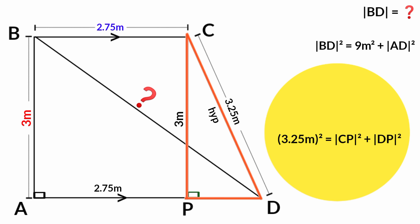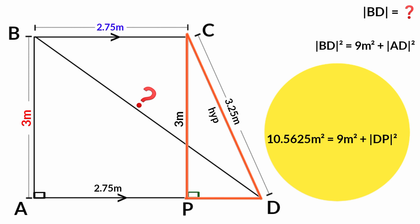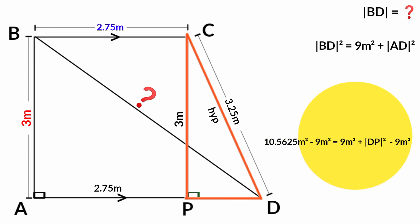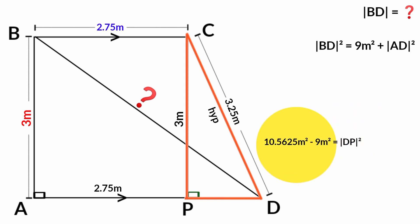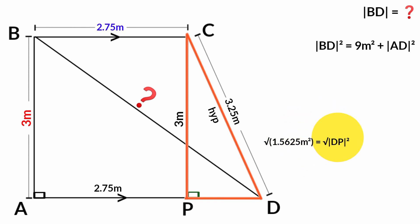Line CD is 3.25 meters and line CP is 3 meters. So 3.25 squared is 10.5625 meters squared, and 3 meters squared is 9 meters squared. Subtracting 9 from both sides: 10.5625 minus 9 equals 1.5625 meters squared. Taking the square root of both sides, the square cancels, and the square root of 1.5625 meters squared is 1.25 meters. So line DP equals 1.25 meters.